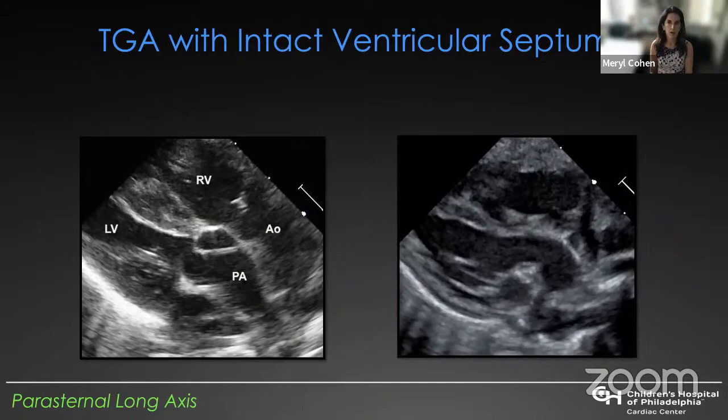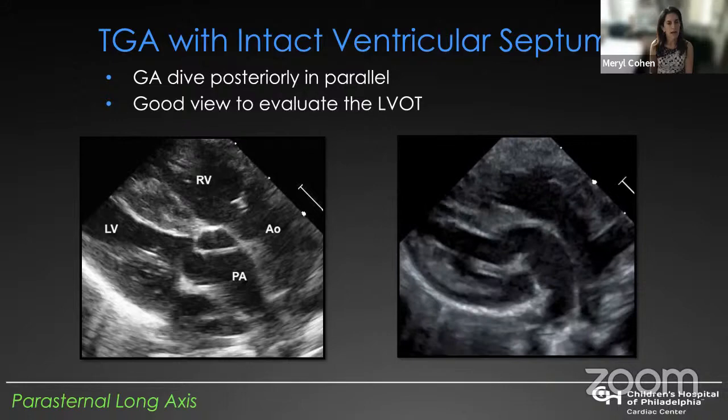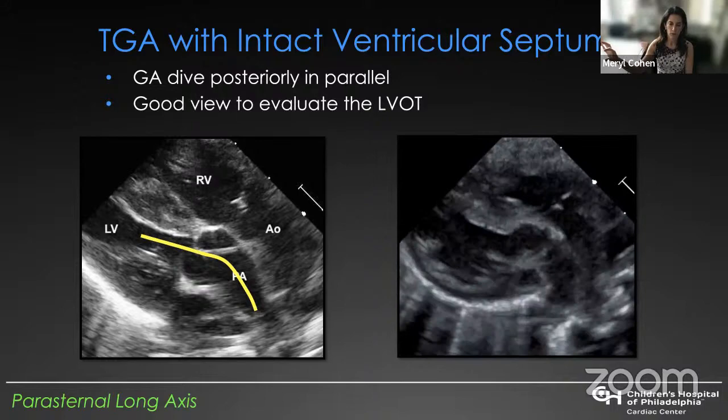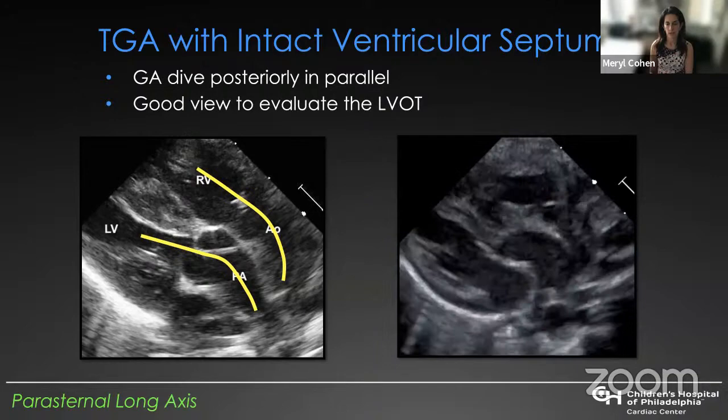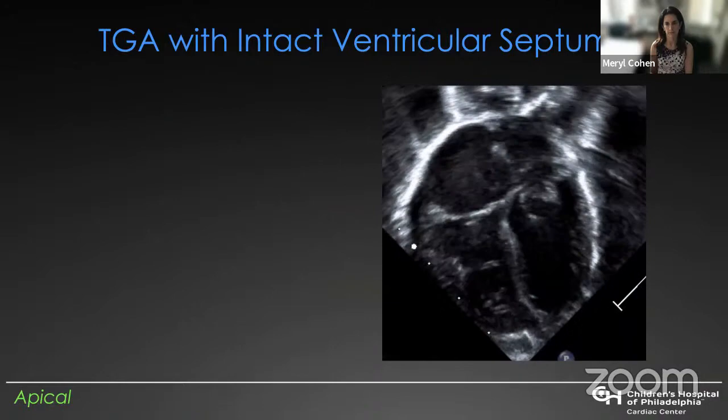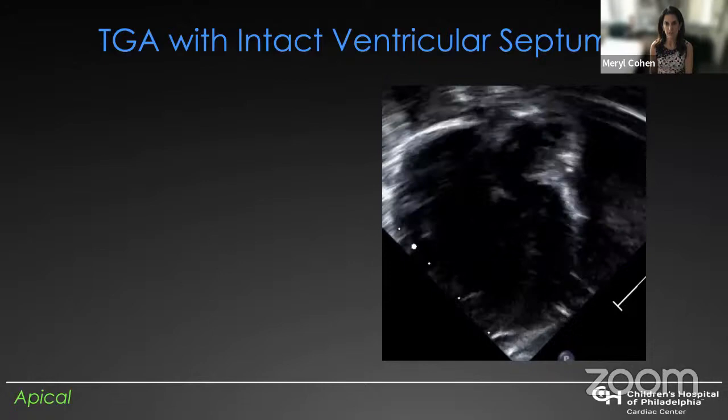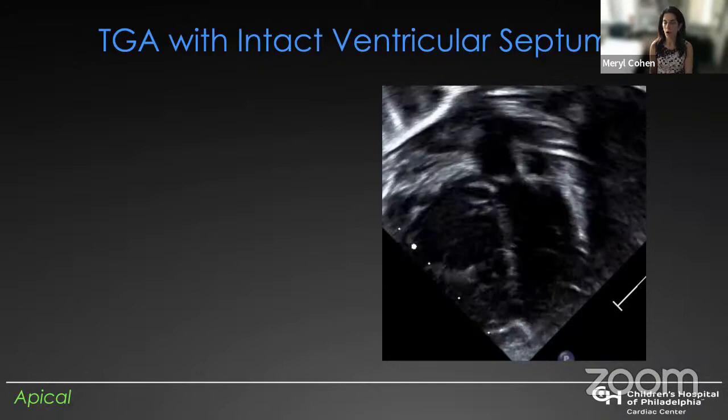These images show multiple different sub-xiphoid planes, really showing the essence of the disease: the great arteries come off from the heart in parallel rather than crossing each other as in patients with normally related great arteries. When you see this immediately, you should suspect that the patient has transposition. If you start in the parasternal long axis view, instead of the aorta arising from the left ventricle, the PA will dive and both great arteries will dive in parallel away from the heart.